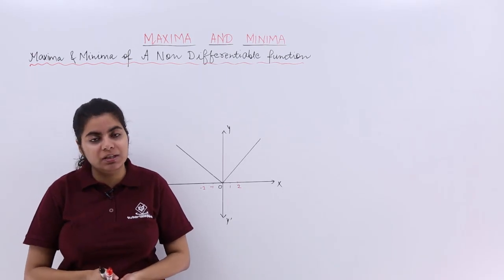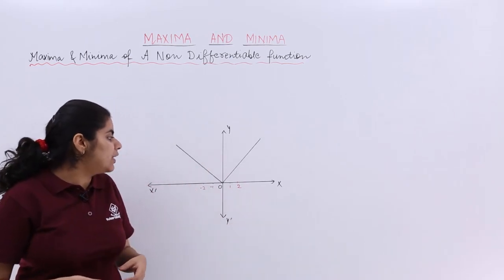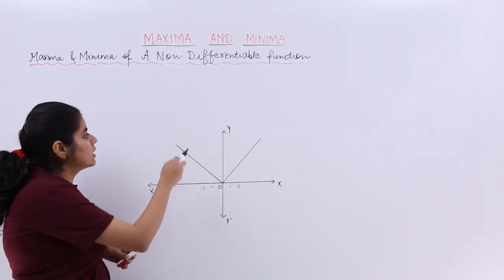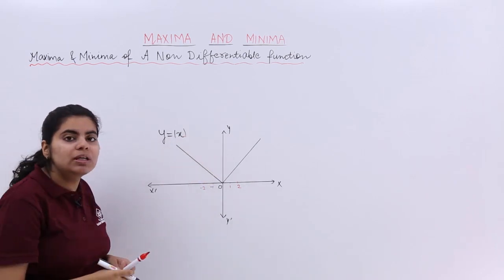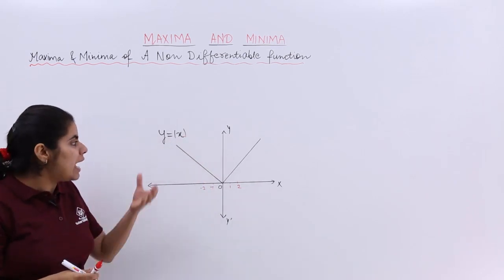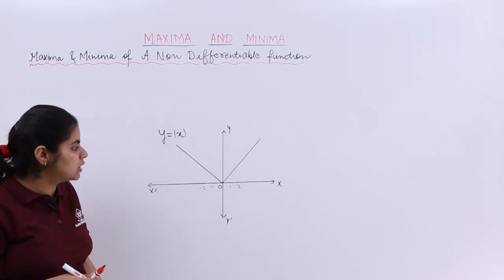A live example in front of us is y equals mod x curve. You already know y equals mod x has this type of graph. You can easily plot it with the help of values and the expansion minus x and x when x is less than zero and x is greater than equal to zero.